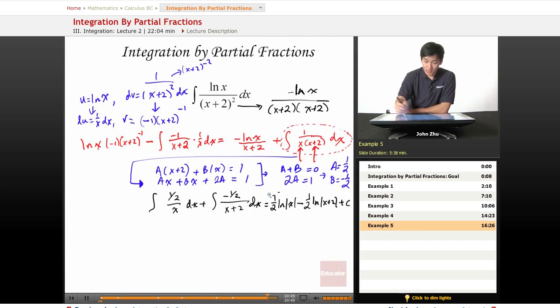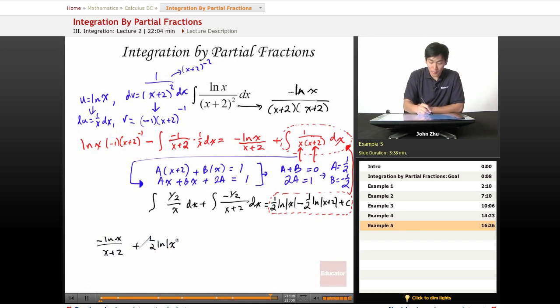So this is our integration by parts portion that we can substitute directly back into here. So rewriting everything, we get negative ln of x over x plus 2 plus 1 half ln of x minus 1 half ln of x plus 2. And this is our final expression.